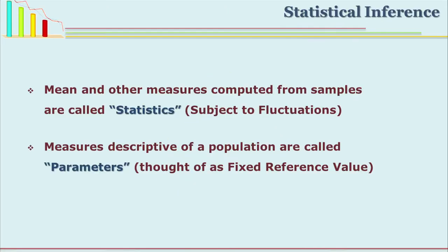Statistical inference means the researcher is inferring from the statistics to the parameters. Statistics refers to the facts related to the sample. The mean and other related measures of the sample are called statistics, and the mean and other related measures of the population are called parameters. We generally infer about the population because we do not study the whole population, except in a census.